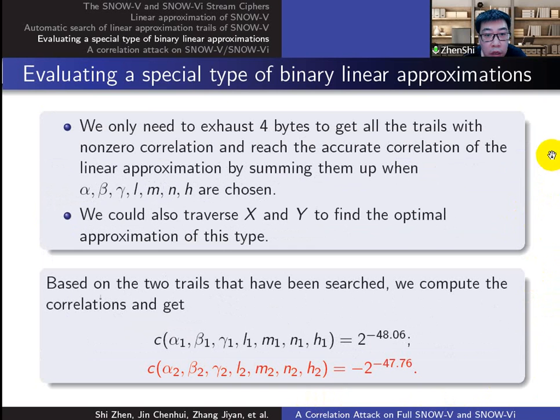Thus, we only need to exhaust 4 bytes to get all the trails with non-zero correlations, and reach the accurate correlations for fixed alpha, beta, gamma, L, M, N, and H. We can also traverse two bytes of alpha and beta to find the absolute correlations as large as possible. Based on the two trails we have searched out, we calculated their correlations. The second one is the best result we got.